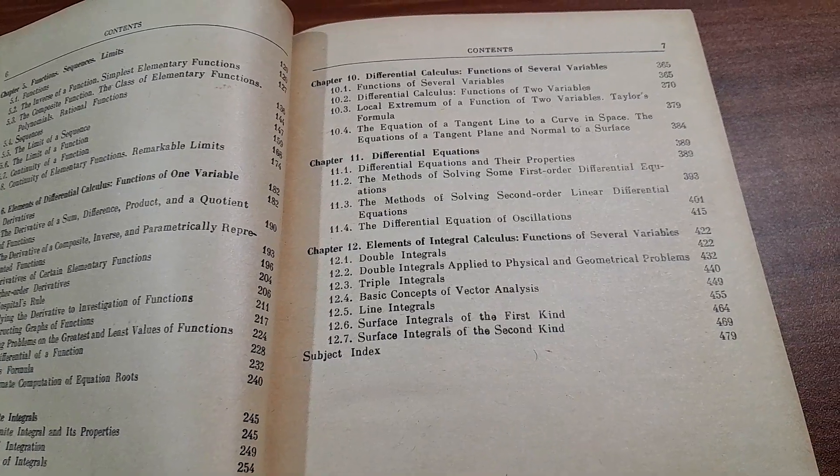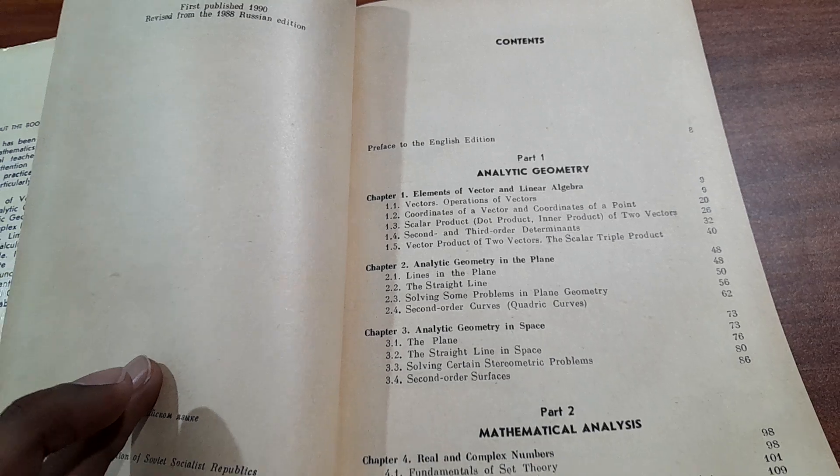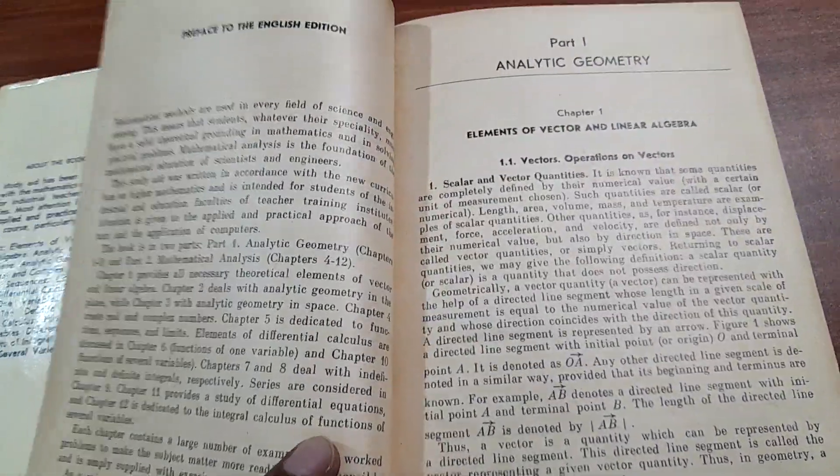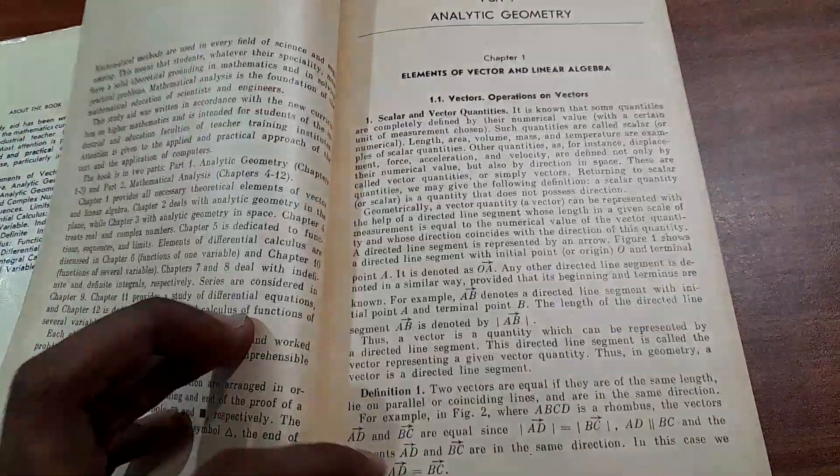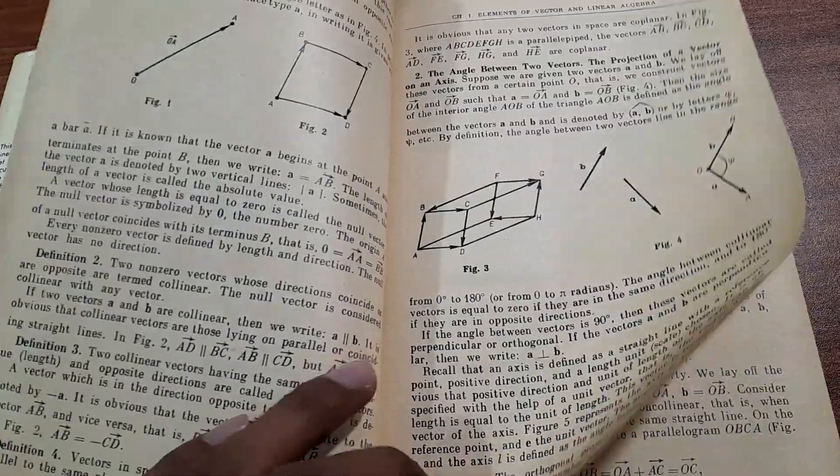So there are two parts: Part One is Analytic Geometry, Part Two is Mathematical Analysis. We'll go through the book. It covers operations on vectors and basic concepts, slowly building up.